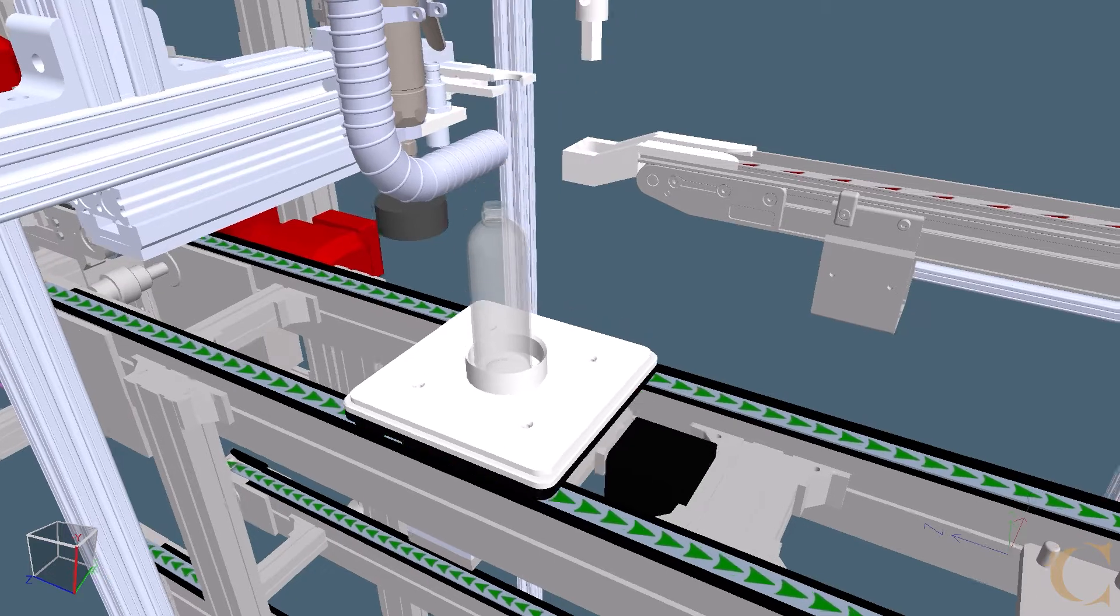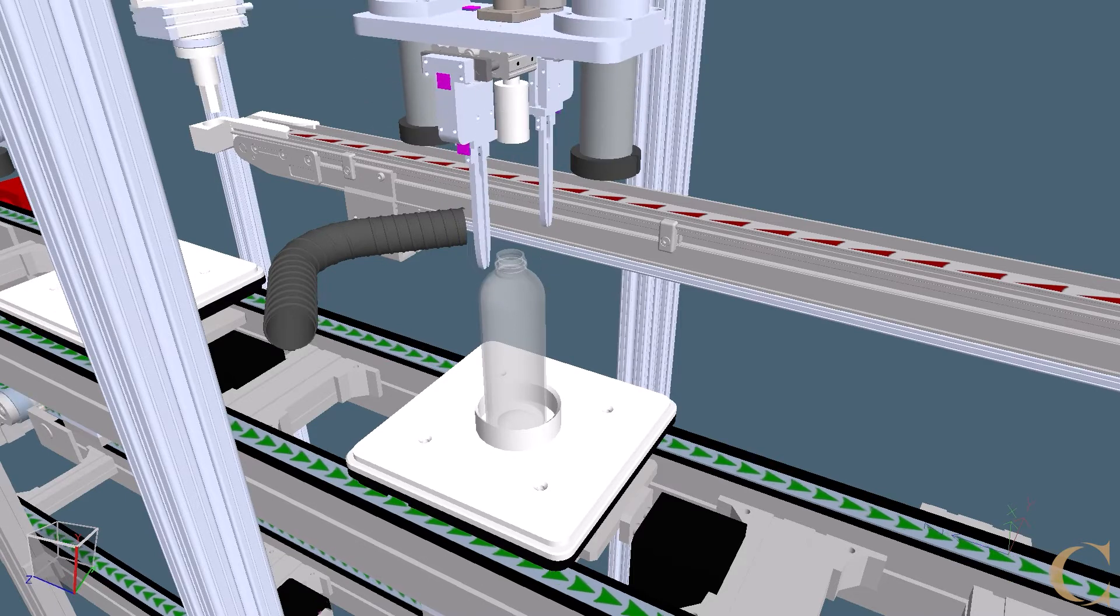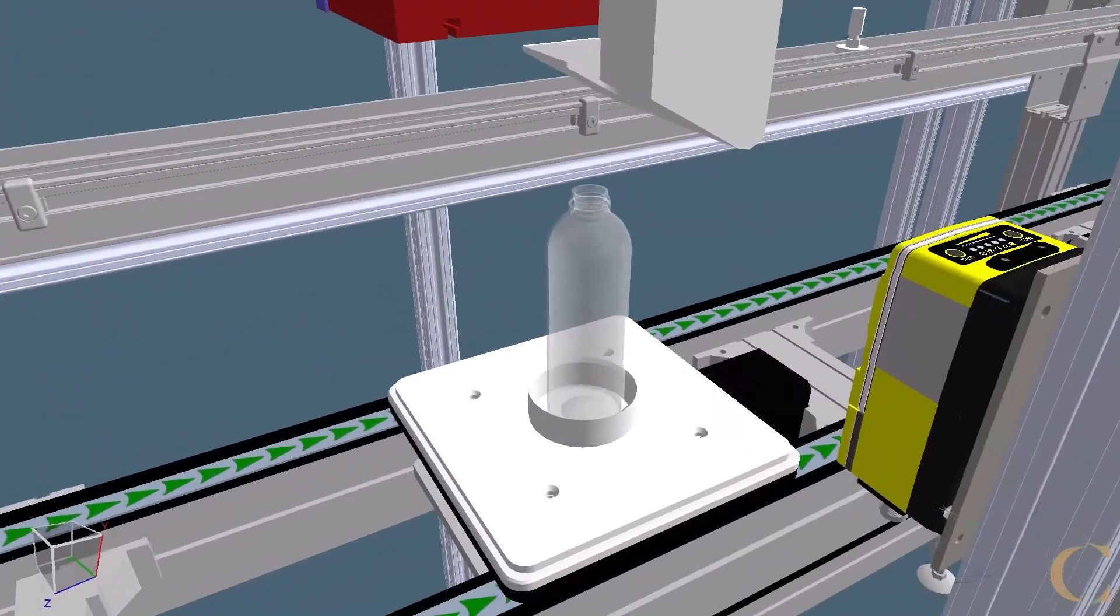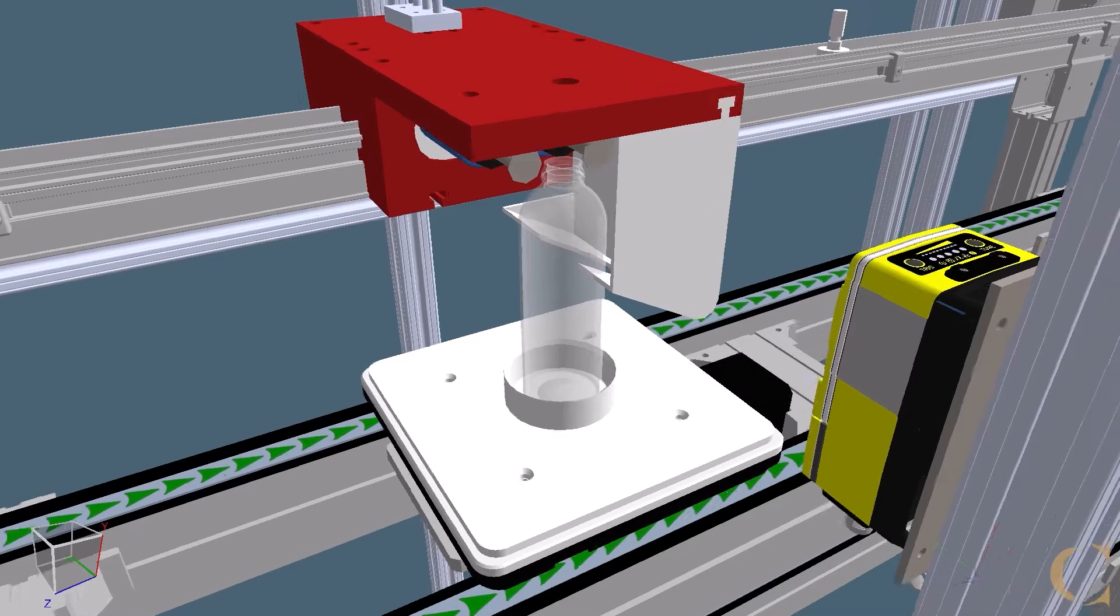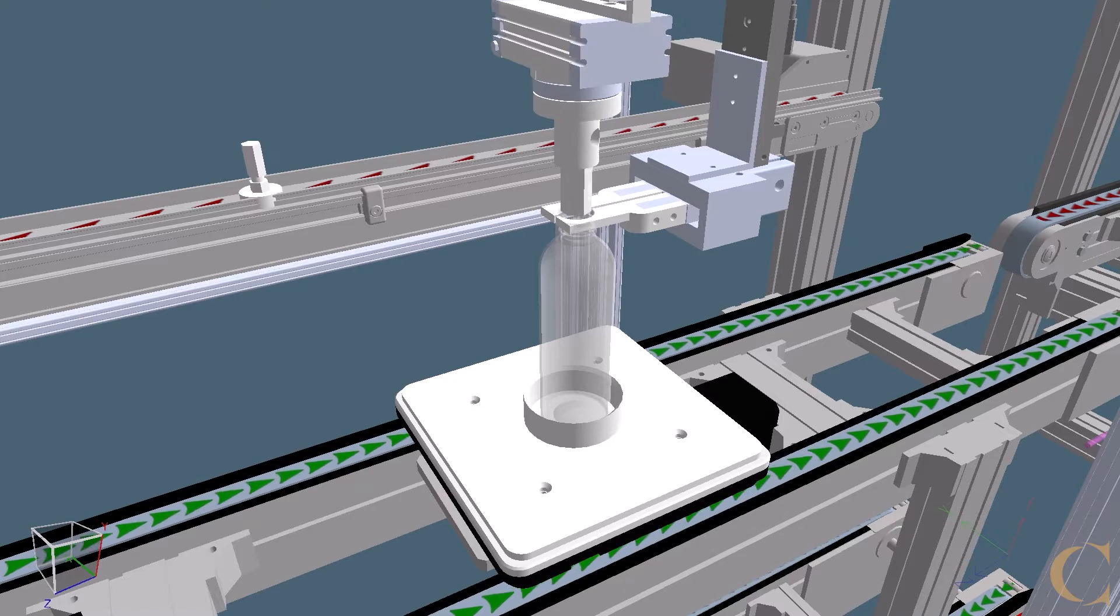The second stage removes the label from the bottle with a pair of pincers. The third stage uses two saws to cut the ring left behind from the cap and a blast of air removes it from the bottle. The bottle is then inspected with a camera to ensure the label and ring are removed.